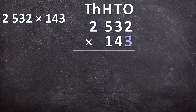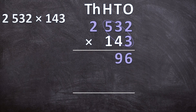First we get the answer for 3 times 2532. Starting at the ones: 2 times 3 is 6. Next, 3 times 3 is 9. Then 5 times 3 is 15 — write down 5, carry the 1. Lastly, 2 times 3 is 6, plus the carried 1 is 7. So 3 times 2532 is 7,596.